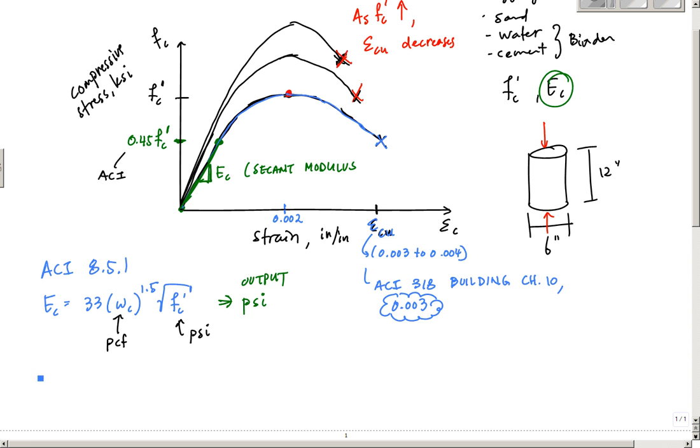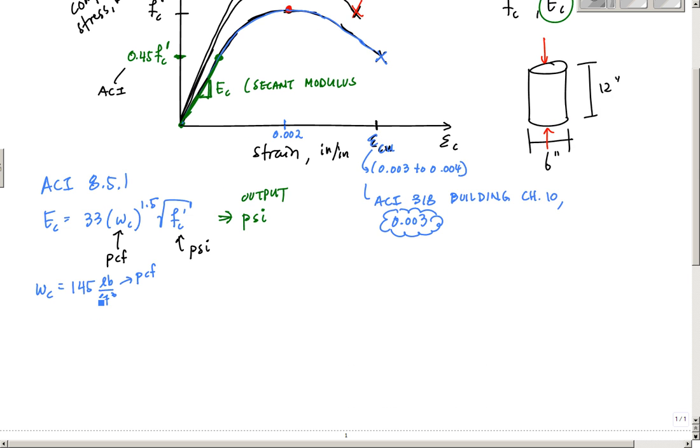If you have a normal weight concrete, which has a density of about 145 pounds per foot cubed, this is also PCF, pounds per cubic foot. You can use another equation that's a little bit simpler and quicker. It's 57,000 square root of FC prime. And this, again, will yield output in terms of PSI output. So it'll give you a number in PSI. And really, most of your applications, or at least the kinds of things you'll work on, will have normal weight concrete. And then you'll be able to use that equation. Or you can just go back and use this. But once you have that set up in a spreadsheet or something, it's really a no-brainer.